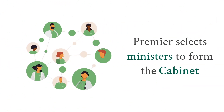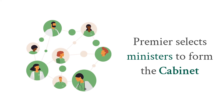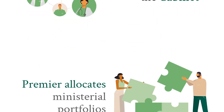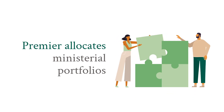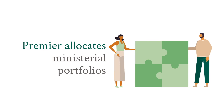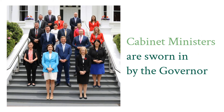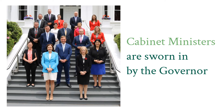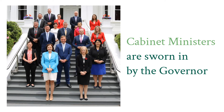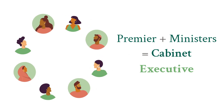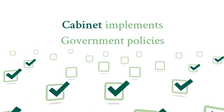Once the Premier is sworn in, they select some of their colleagues to form a cabinet and allocate ministerial portfolios, or areas of responsibility. These ministers are then also sworn in by the Governor. The Premier and ministers make up the Cabinet, who comprise the Executive and are responsible for implementing the policies of the Government.